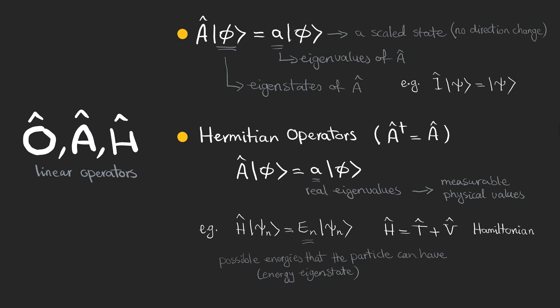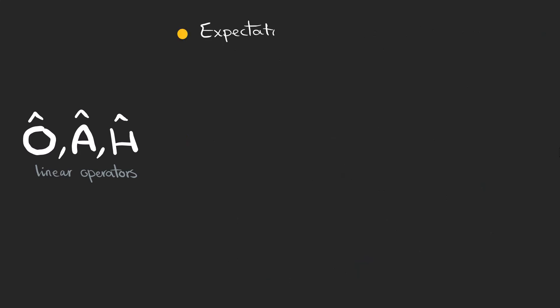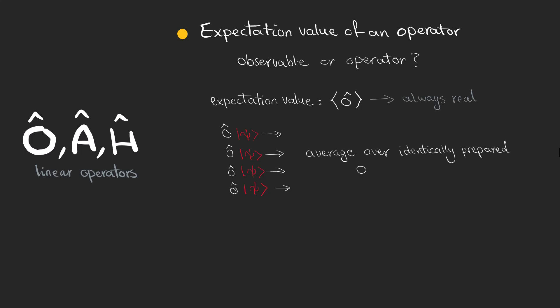The last concept I want to talk about in this video is the expectation value of an operator. We usually use the term observable instead of operators to refer to Hermitian operators which have real eigenvalues because in quantum mechanics, non-Hermitian operators do not correspond to physical observables.